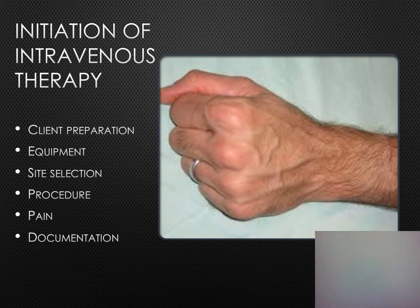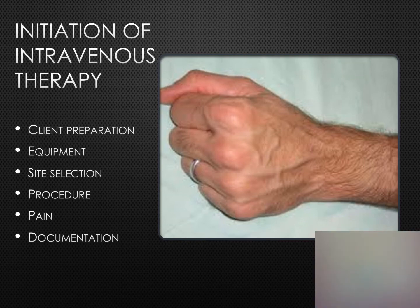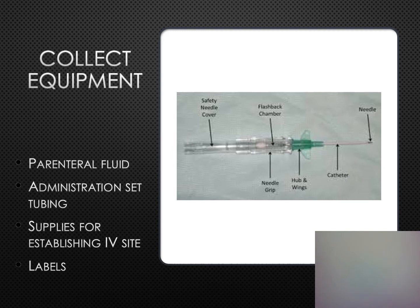Topical transdermal cream must be applied and frequently covered with an occlusive dressing for about 30 to 60 minutes to ensure effectiveness. Topical vapor coolant sprays provide immediate anesthetic action. Pressure-accelerated lidocaine uses a mild electrical current to deliver the anesthetic over a 7 to 10 minute time frame with minimal discomfort. Make sure to document any teaching provided and any anesthetics that were used.